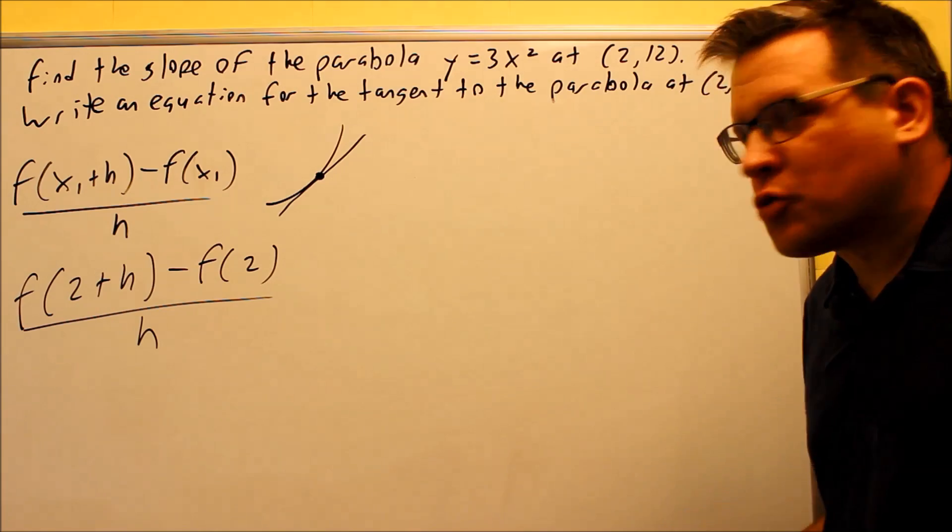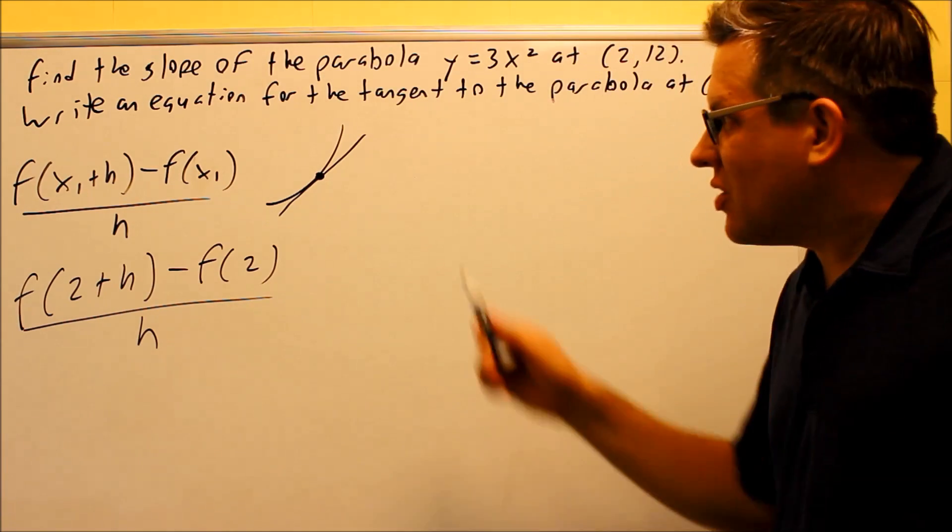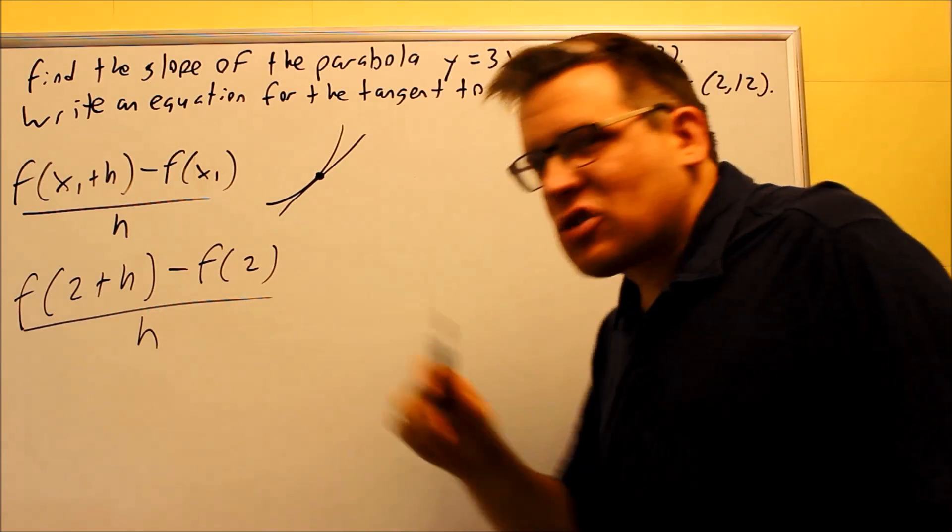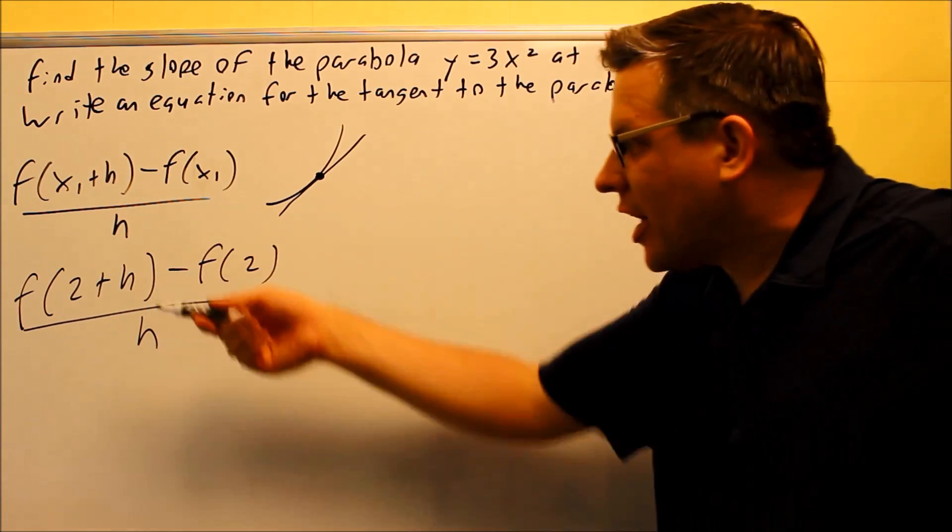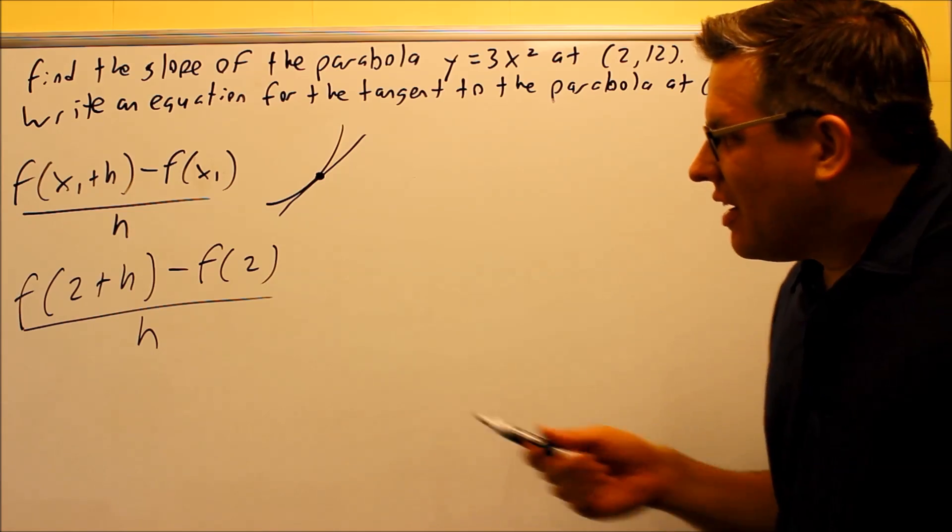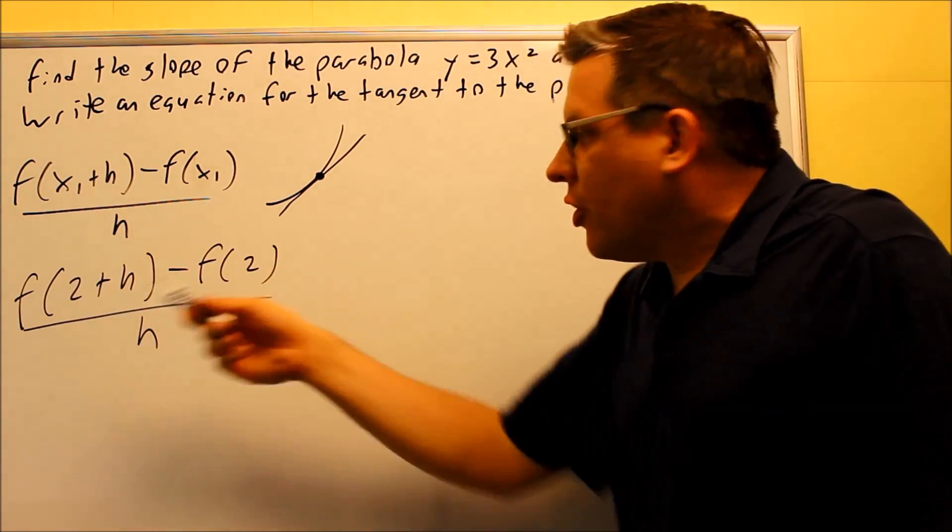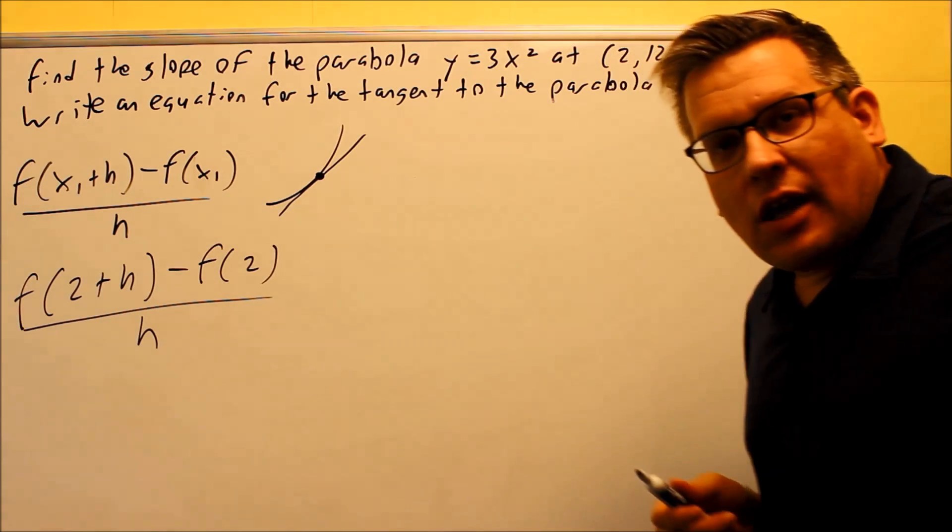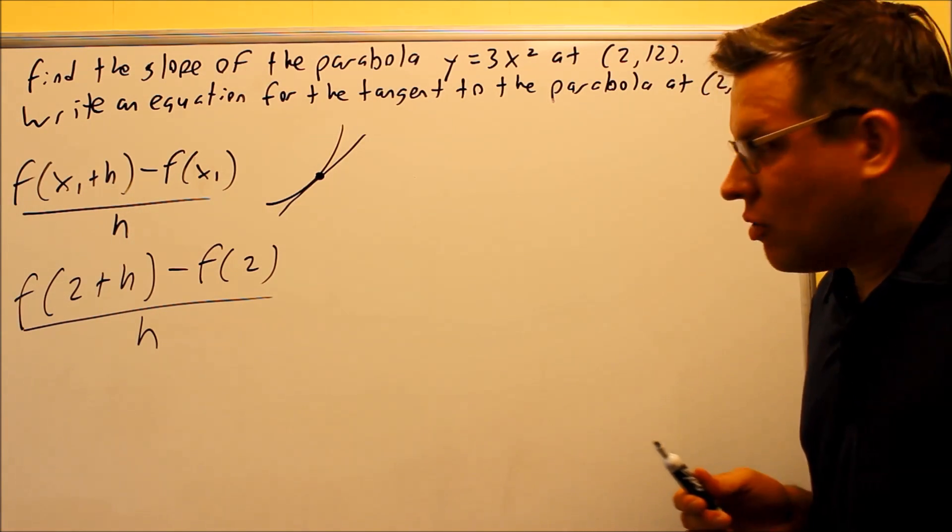So what we're going to eventually do is put a 0 in for h because the distance between those two points is going to be minimized, and it's going to go to 0. Now I can't just plug a 0 in now because I'm dividing by 0. So what I have to do is some algebra in order to fix this to where the h is going to go away, and then I can plug 0 in and I won't be dividing by 0.